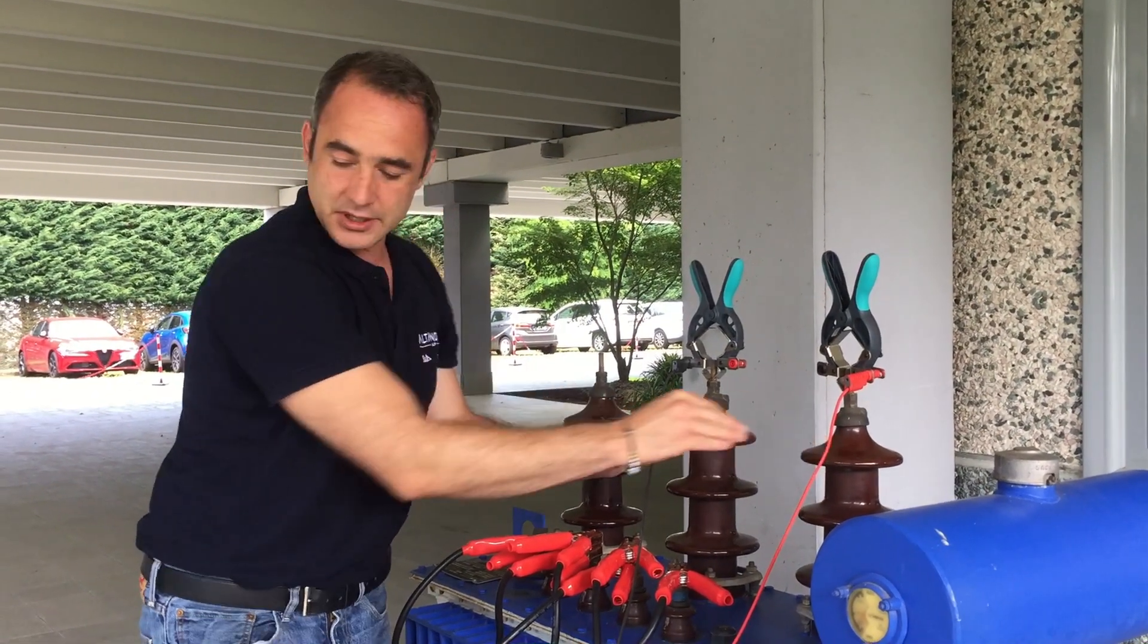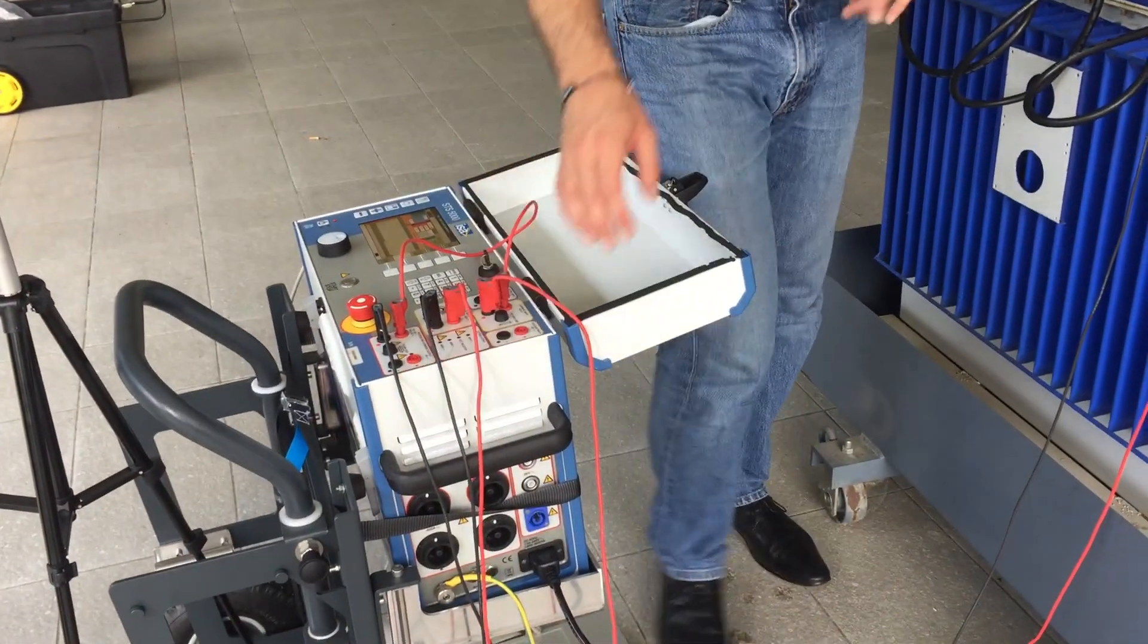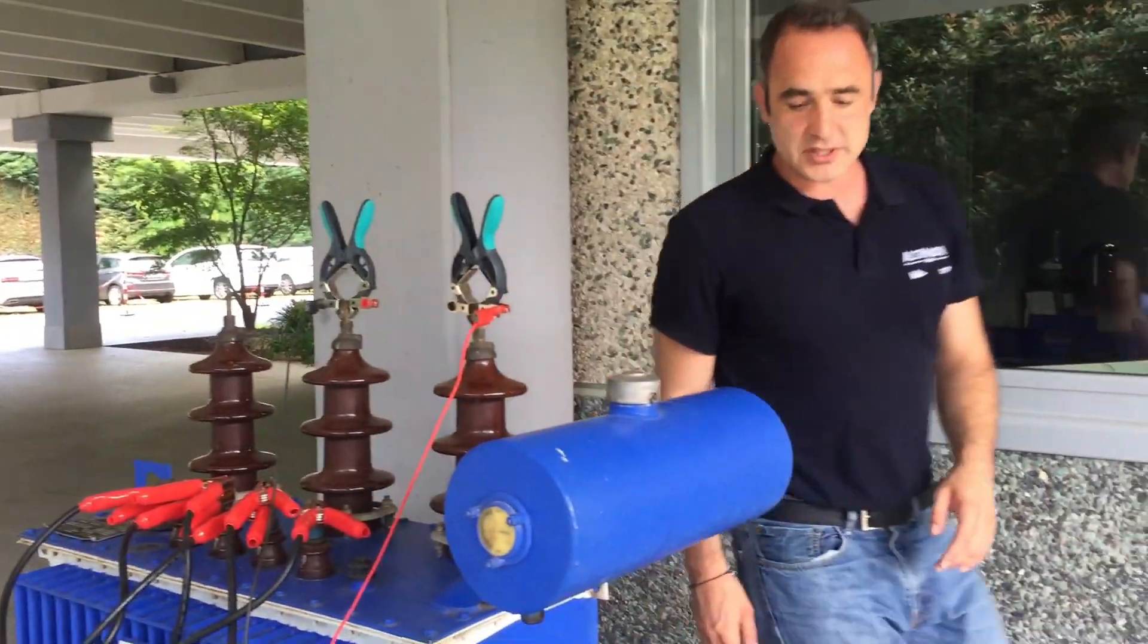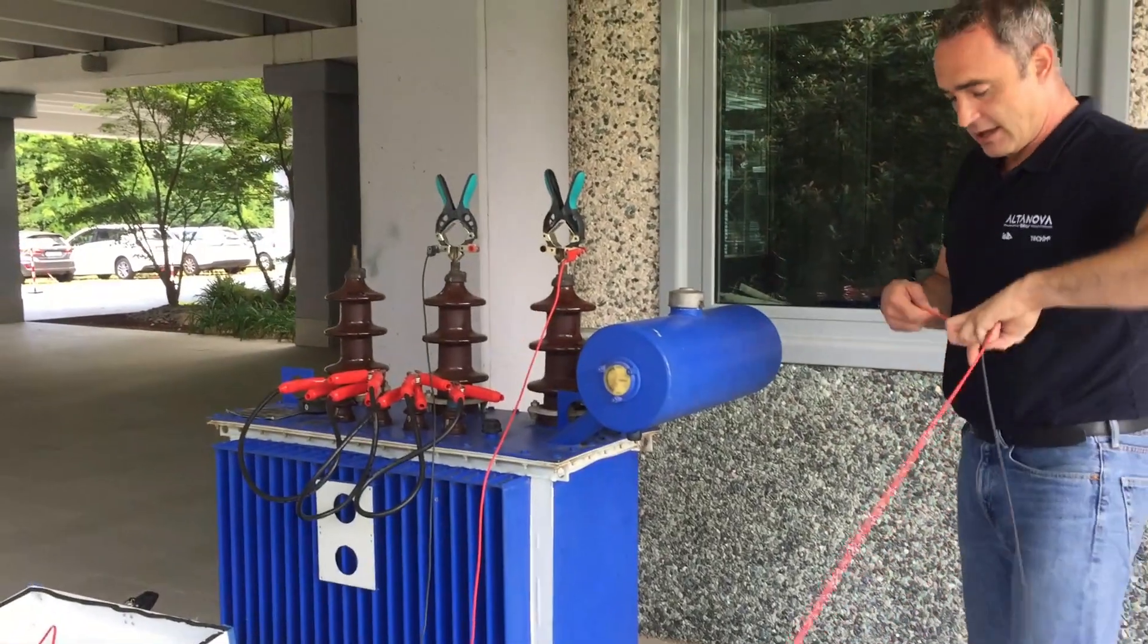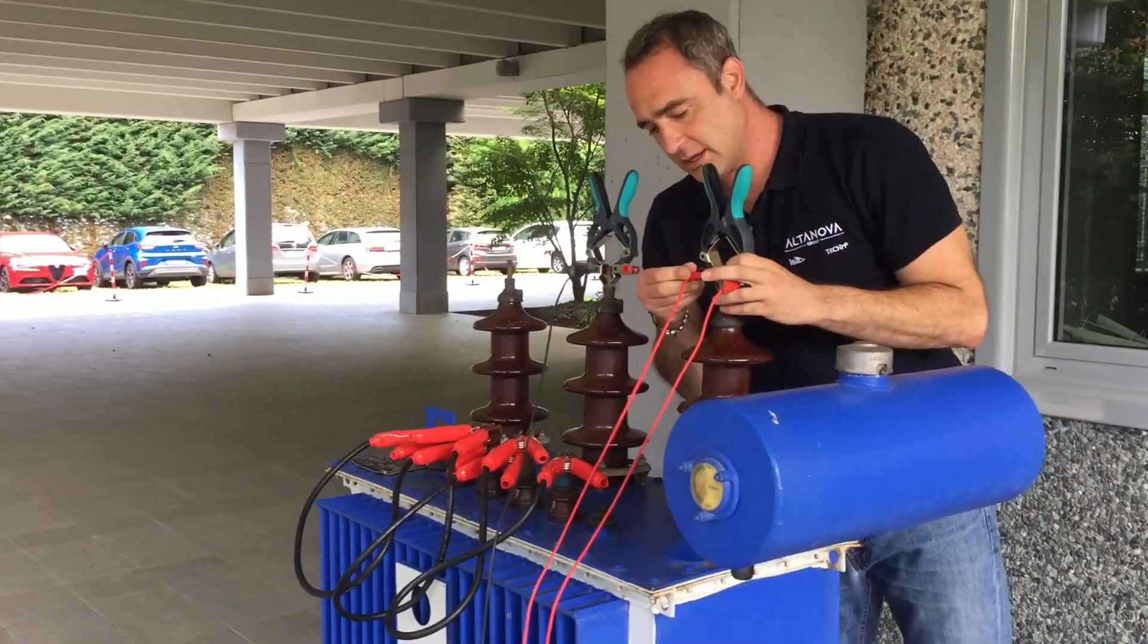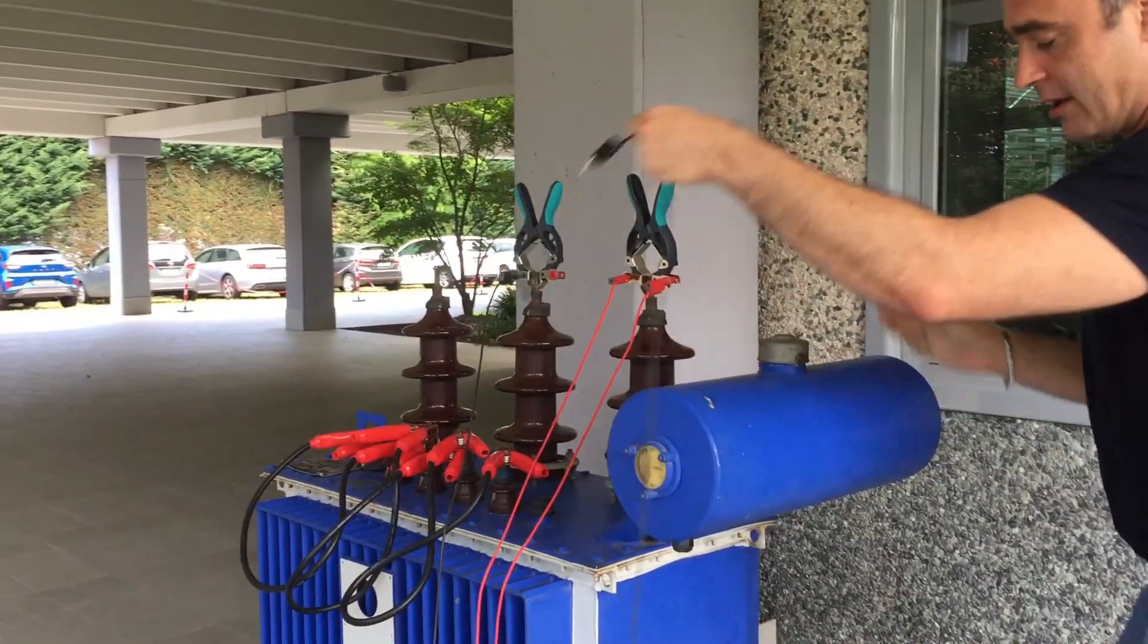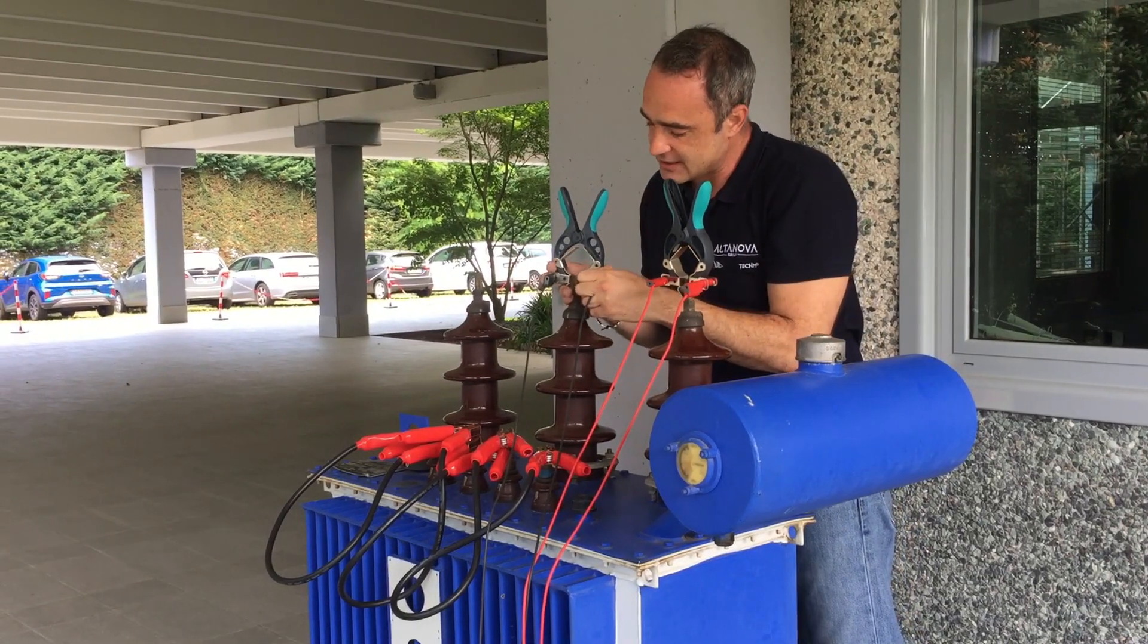With this I will generate 100 volts here on the primary side. What I need to do is also to measure this very accurately. For that purpose we're going to use the 300 volts input. I need to connect it here on the transformer. Right now we are ready to start the test.